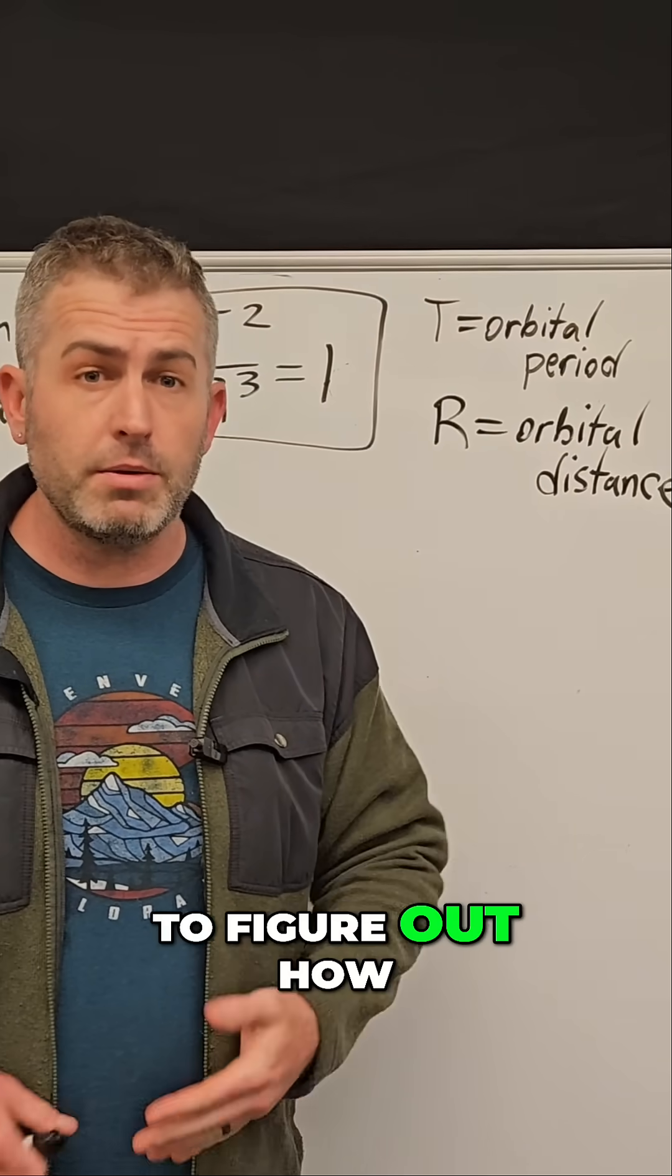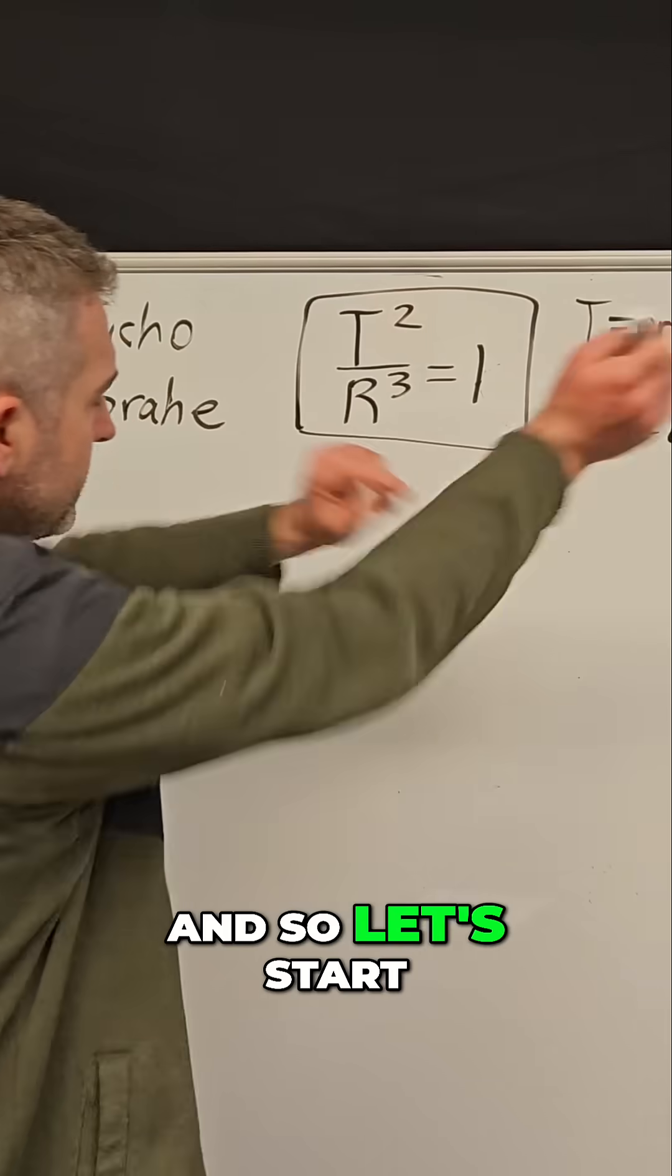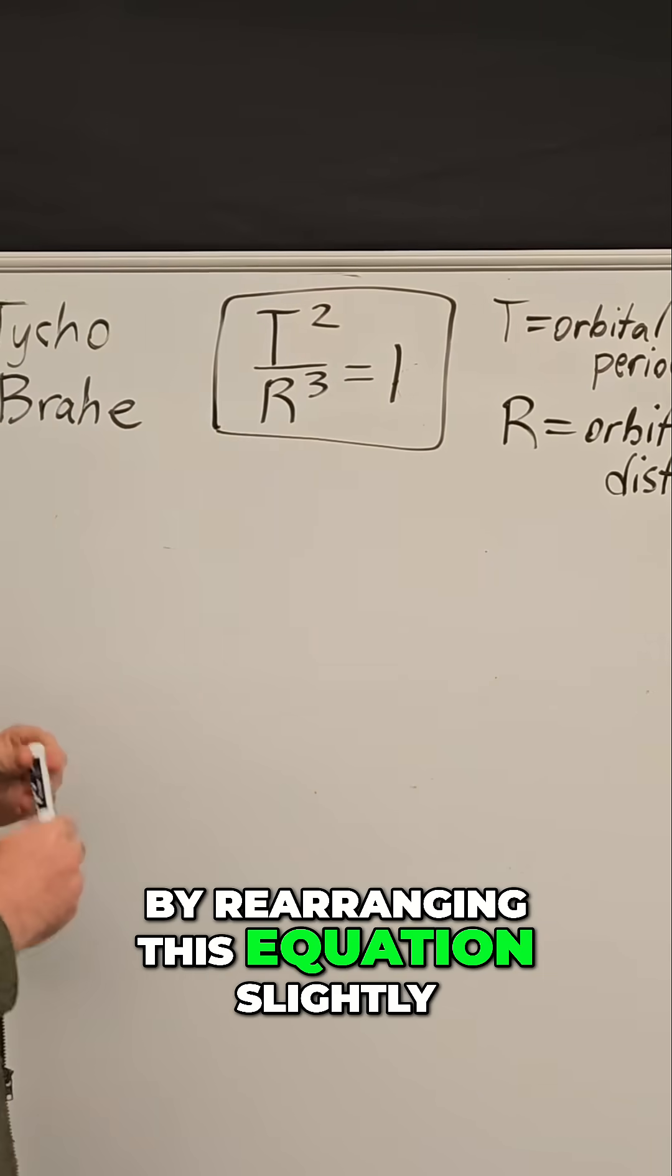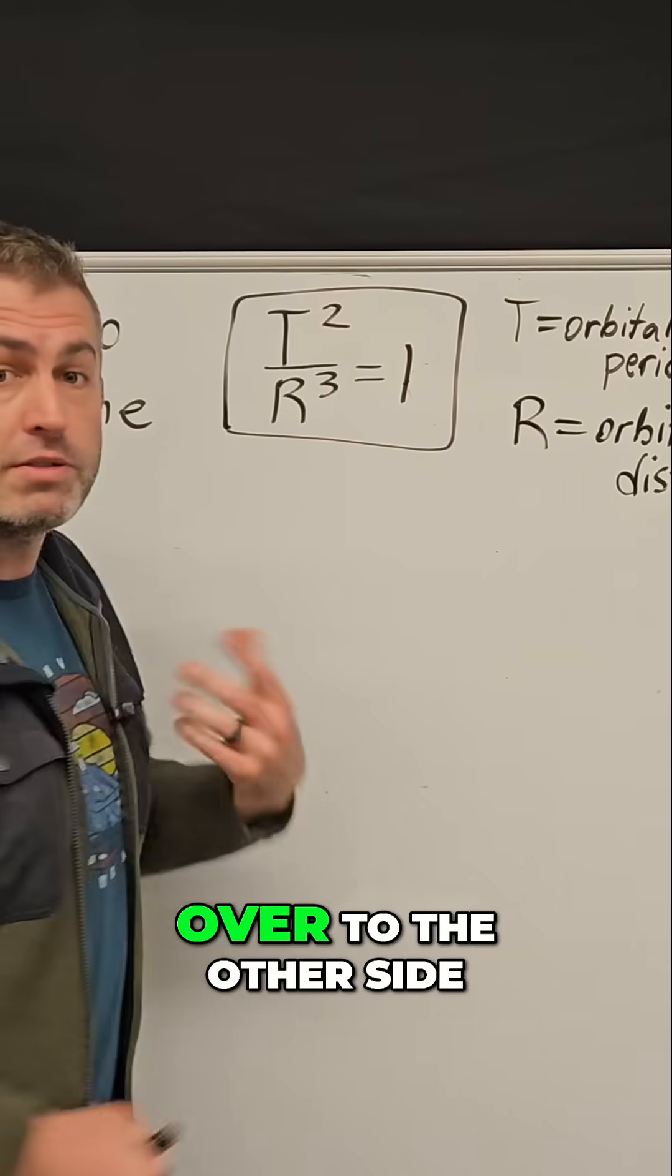I think we're ready to use this equation to figure out how far away planet Mars is from the sun. Let's start by rearranging this equation slightly, because if we have a one on this side, mathematically we could just bring the R cubed over to the other side.